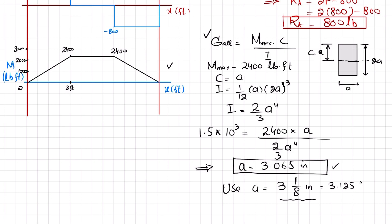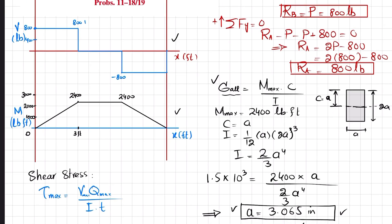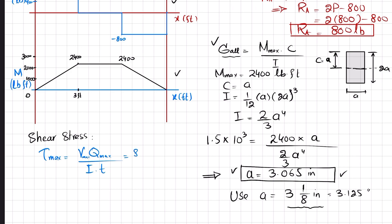We must also verify this dimension against the shear stress criterion. The selected 'a' was based on the allowable bending stress, so we now check whether it satisfies the allowable shearing stress. The maximum shear stress formula is τ_max = V_max · Q_max / (I · t). From the shear force diagram, V_max = 800 pounds.